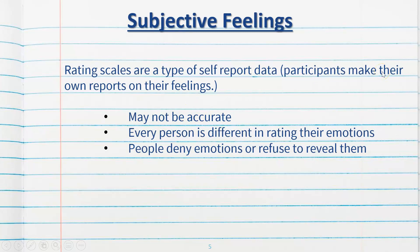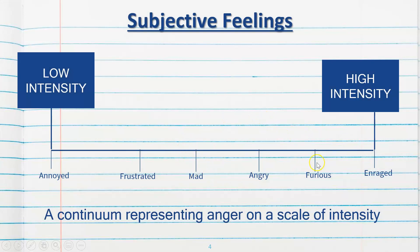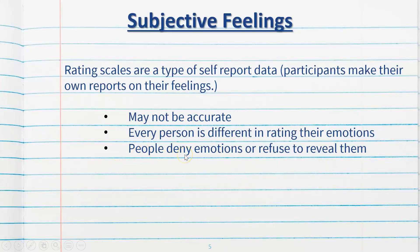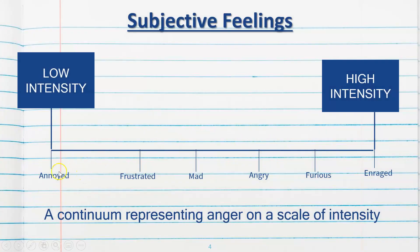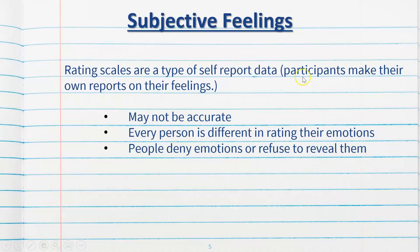It's important to note that these may not always be accurate. Someone may lie about the true indication of the intensity of the emotion they're feeling at the time. Every person is also different in rating their emotions — my own interpretation of 'mad' may be somebody else's 'furious,' or someone else's 'annoyed' might be another person's 'furious.' So it's subject not only to the emotion itself and how the person is experiencing it, but how they interpret these words and their intensity. People may also deny or lie about their emotions. So rating scales in terms of subjective feelings are not always going to be valid or reliable ways of measuring someone's subjective feelings.